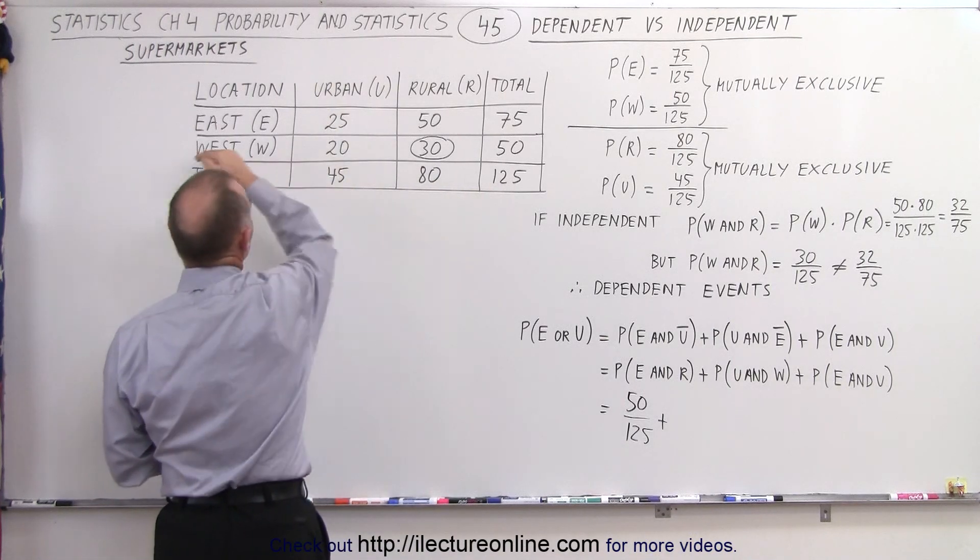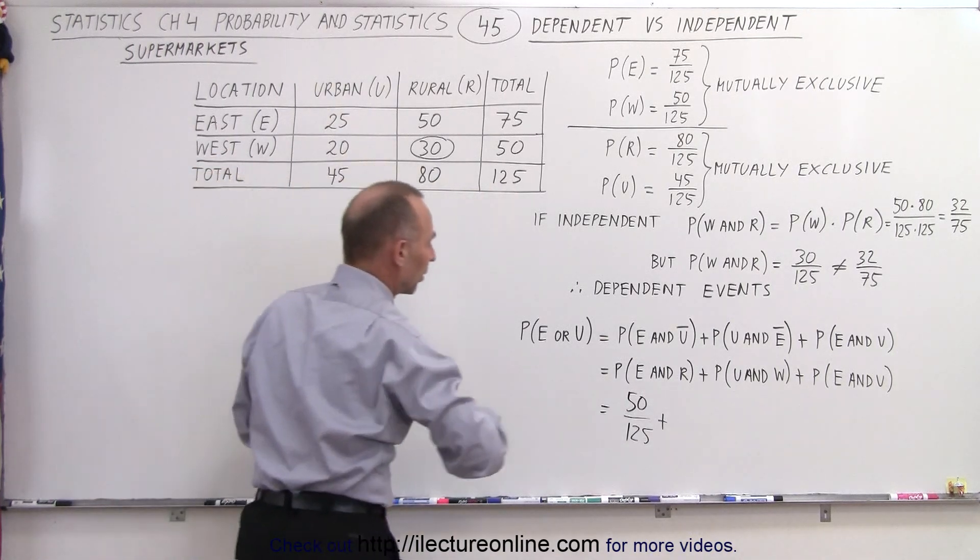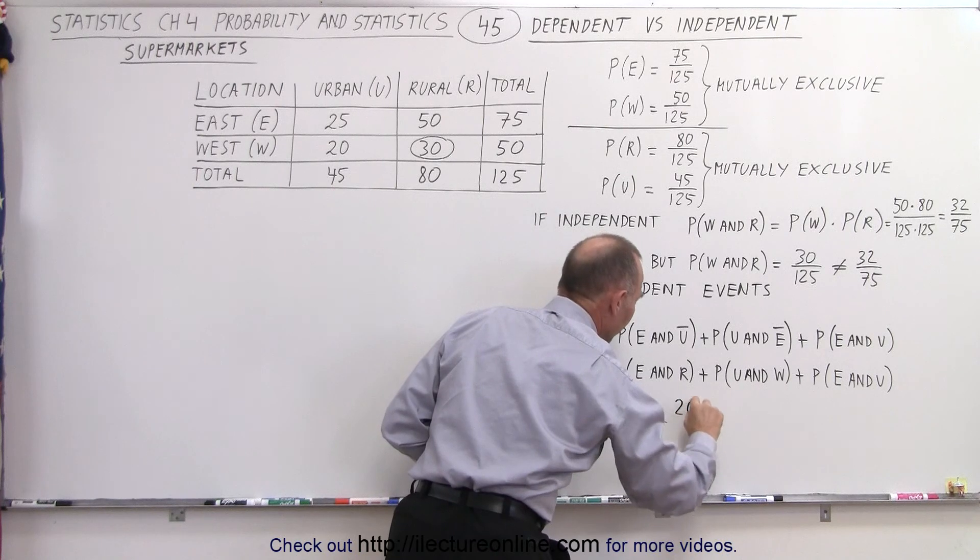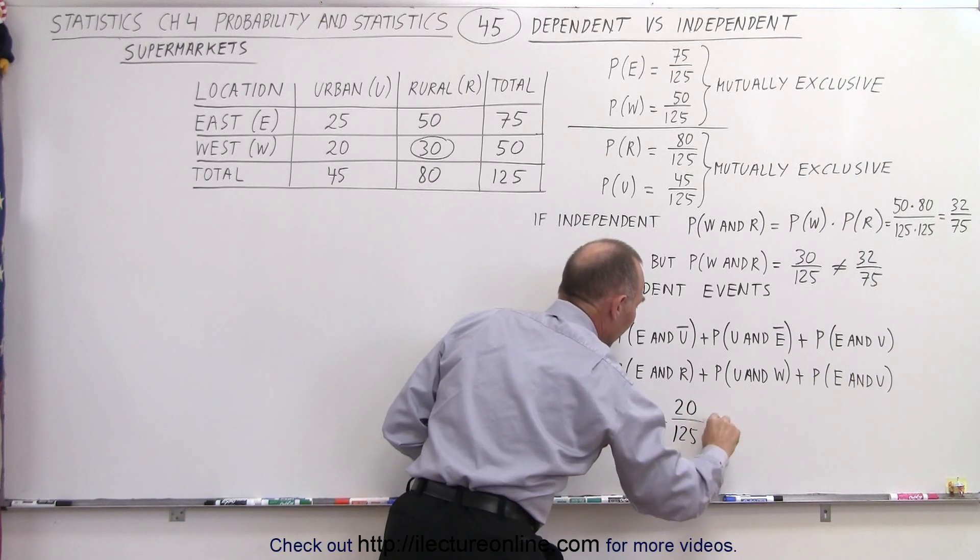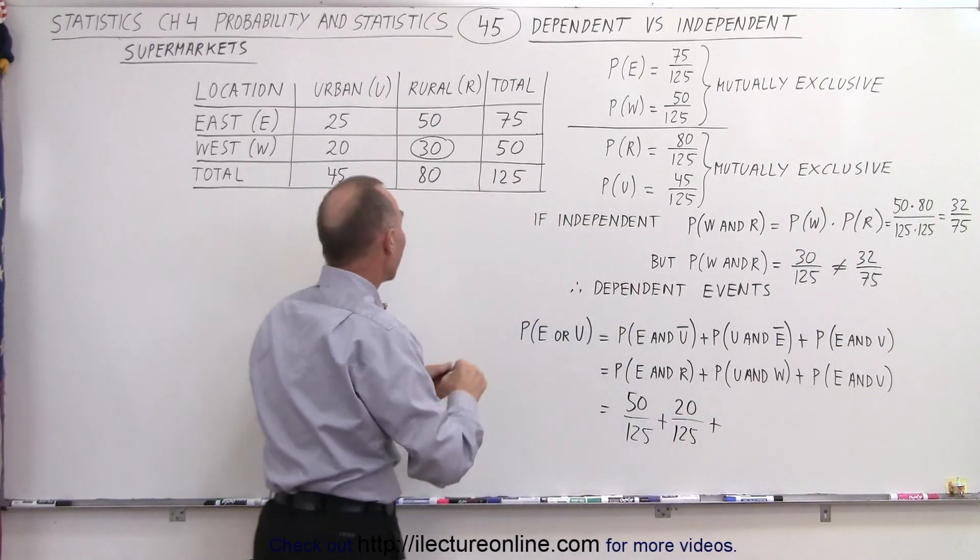So here's urban, here's west, that's 20 supermarkets that fall in that category, and then we add the probability of east and urban.